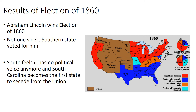Lincoln won without a single vote from a southern state. Looking at the electoral map, the red states voted for Lincoln, blue for John Breckenridge, light brown for John Bell, and teal for Stephen Douglas. The South then felt they no longer had a political voice in Congress and that their concerns would not be addressed. Because of this, South Carolina became the first state to secede — or leave — the Union, starting the Civil War.